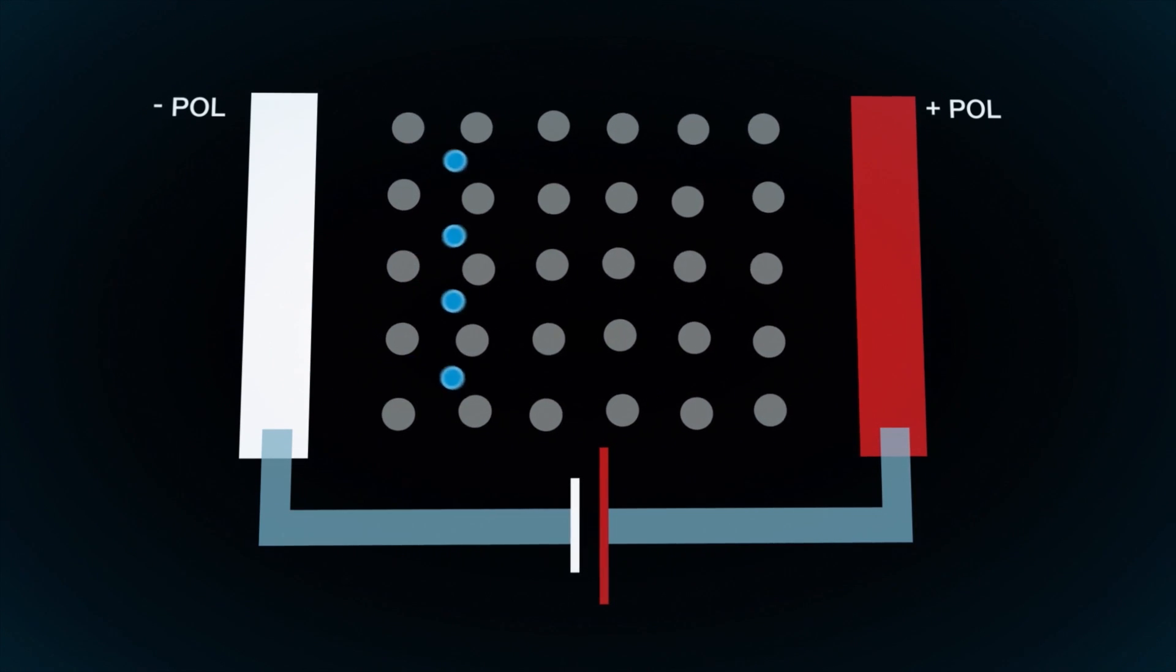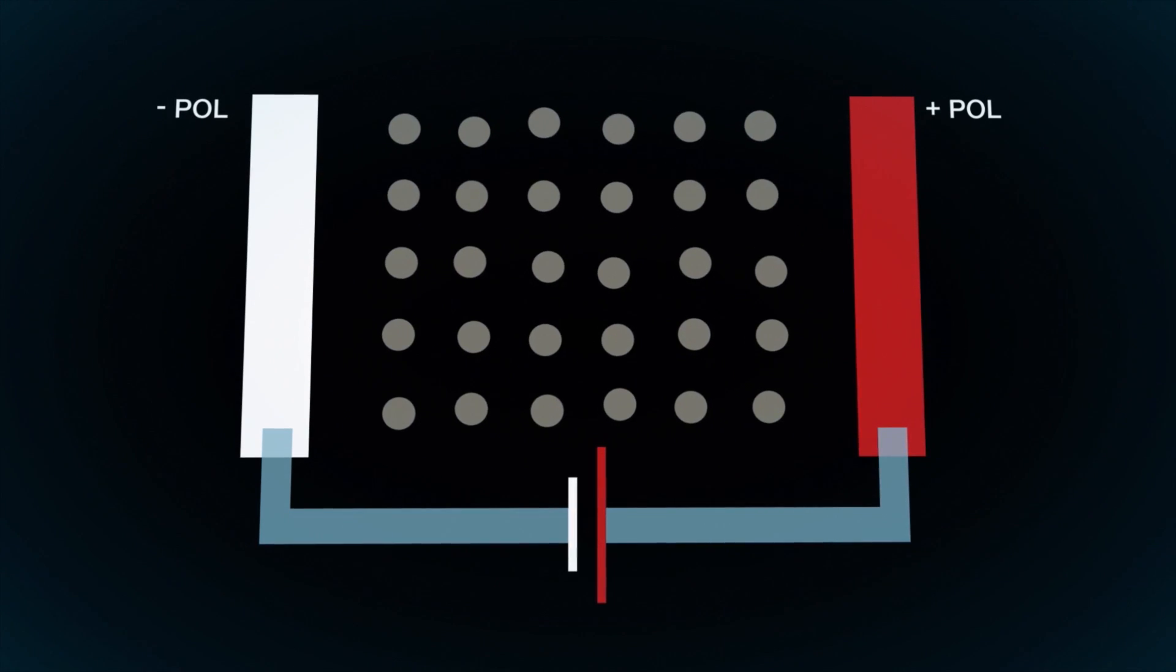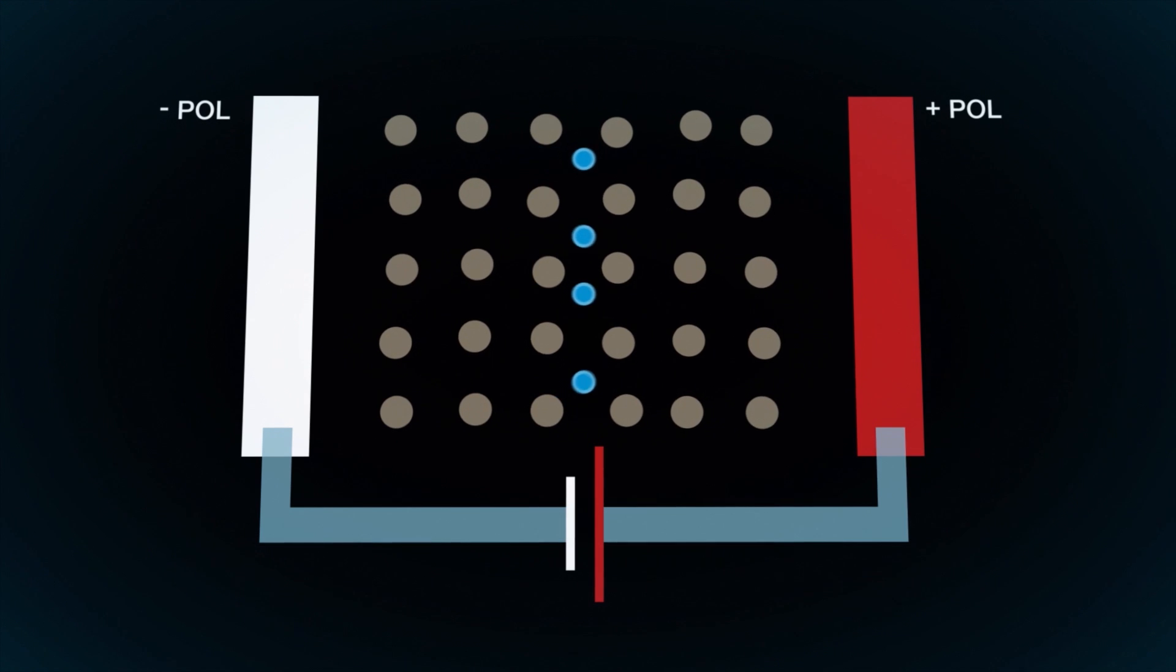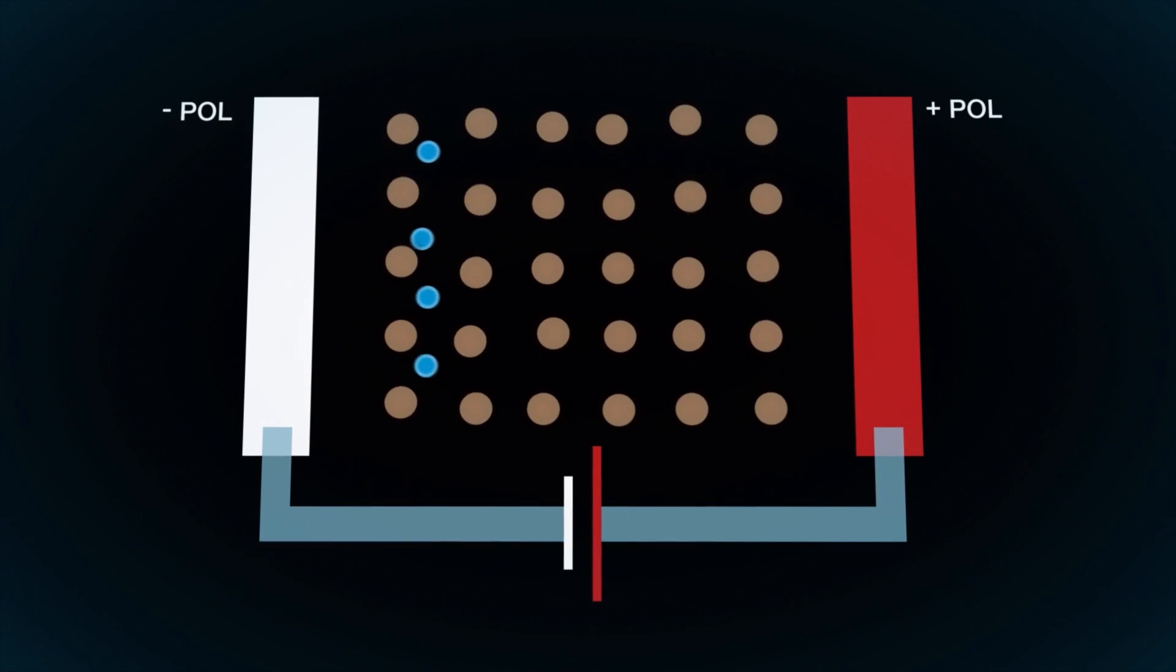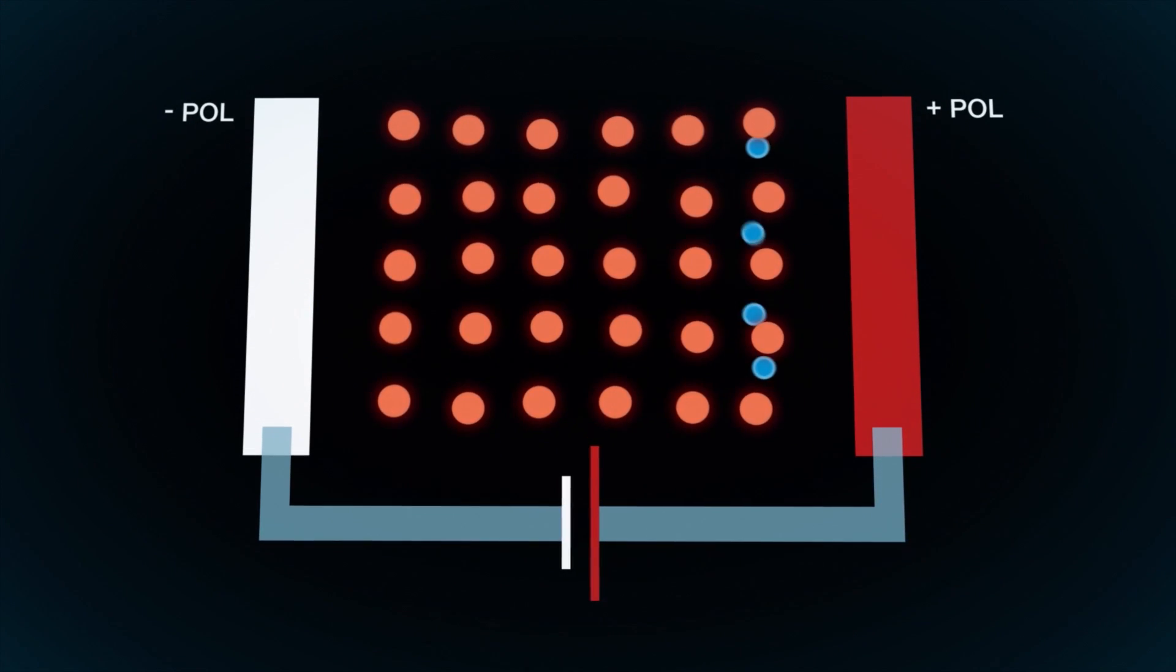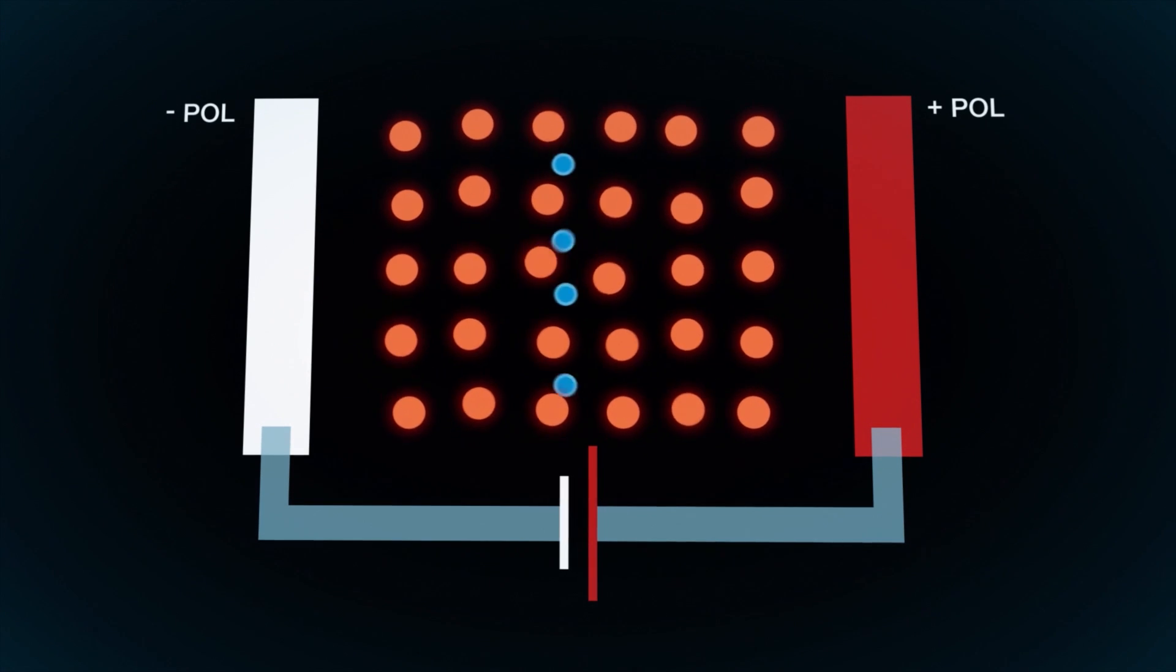If the temperature of the platinum rises, the natural oscillation of the metal atoms increases. This impedes the current flow more and more and the electrical resistance increases.